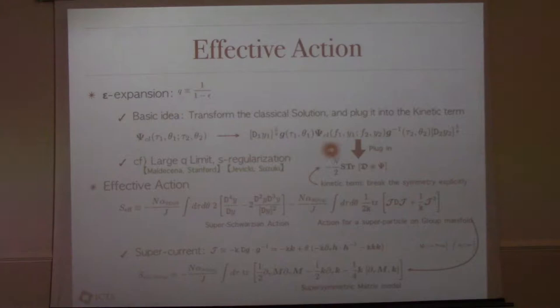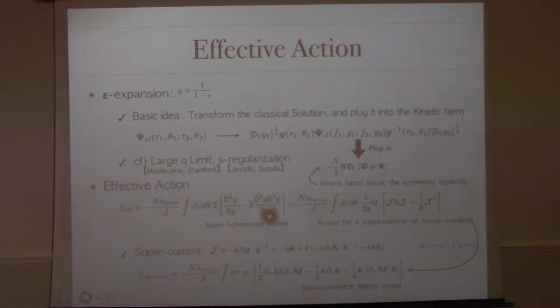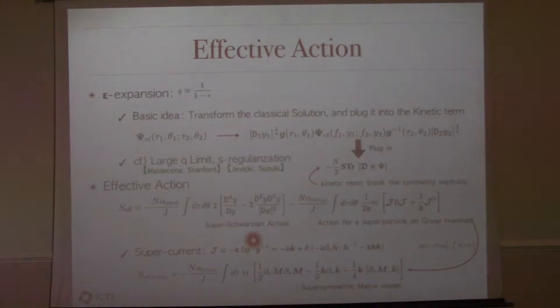The effective action has two parts. The first term is the super-Schwarzian action, already observed in the N=1 supersymmetric SYK model, coming from the broken super reparametrization. The second term comes from the broken local SO(Q). J is defined as a supercurrent of the SO(Q) matrix, and this action is the superparticle action on the SO(Q) manifold. If one manipulates this slightly, one can obtain a supersymmetric matrix model.